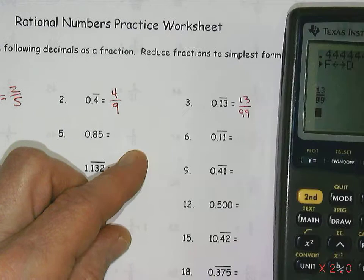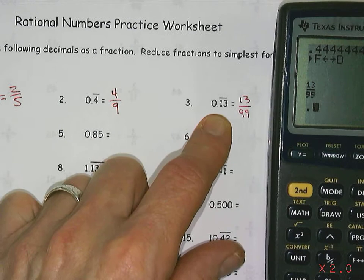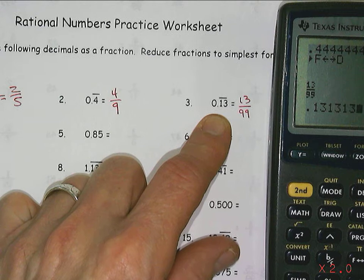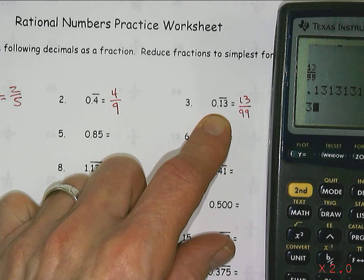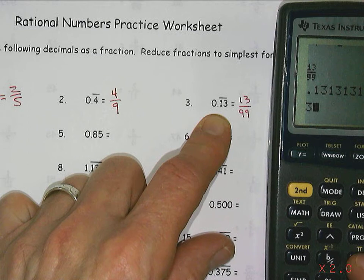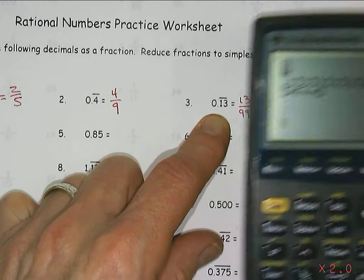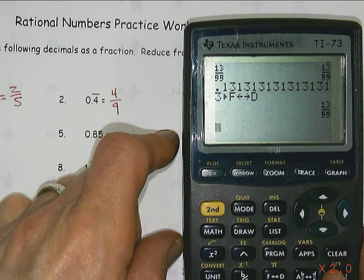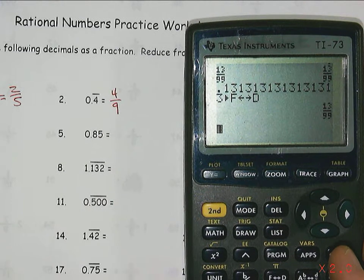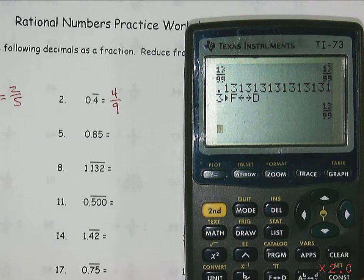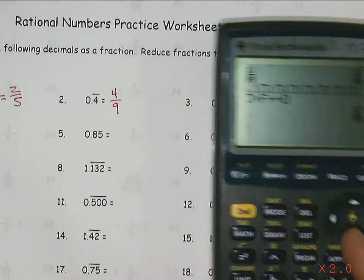And if you didn't know that 0.13 repeating was 13 over 99, and you just wanted to make sure, I could put in a bunch of those and go fraction to decimal, and it would give me that 13 over 99 as well. So there's a couple ways to use the calculator to help you go back and forth between fractions and decimals, and to simplify as well.